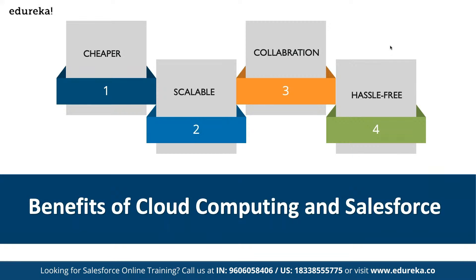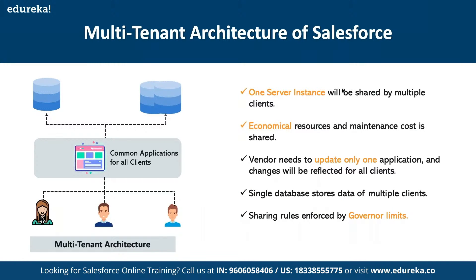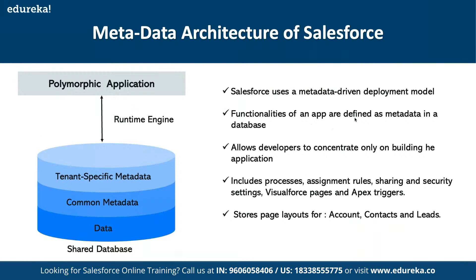In terms of how Salesforce works, it follows a multi-tenant architecture where one server is shared among different clients — called a shared instance. This makes it economical: if a server costs $10 per hour, that cost is split among different customers. Vendors need to update only one application and changes are reflected for all clients. A single database stores data for multiple clients, and sharing rules are enforced by governor limits. The shared database has a layered structure: common metadata, tenant-specific metadata, and polymorphic applications.